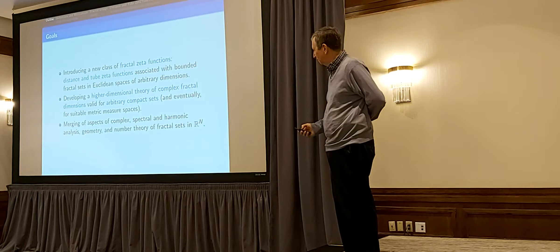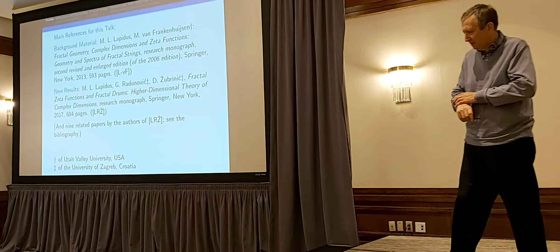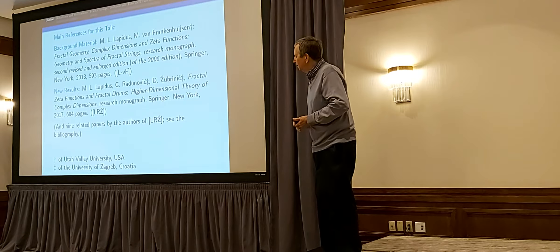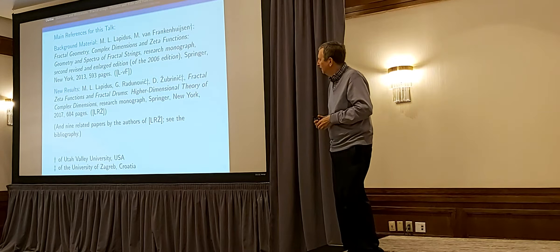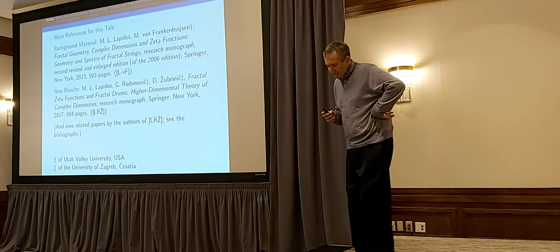Some of the main references: there is an earlier book with Michel Lapidus and Machiel van Frankenhuysen on fractal geometry and number theory, first published in 2000, then a larger one in 2006, and the second edition in 2013. This was mostly the one-dimensional theory, or very special higher-dimensional geometry. But many of the techniques developed there have been useful in the higher-dimensional case.